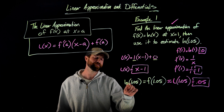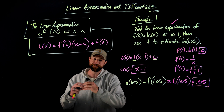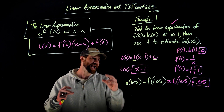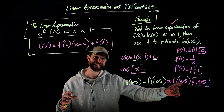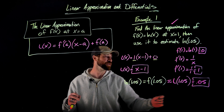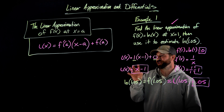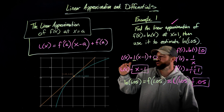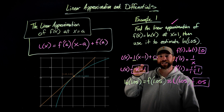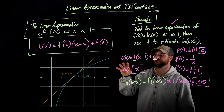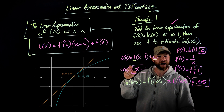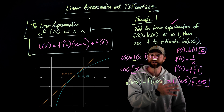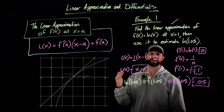We're estimating the natural log of 1.05 by first finding the equation of the tangent line near x equals 1, then plugging that value into the tangent line. Looking at the graphical representation, the output of this linear approximation is a little bit off from the function natural log at x equals 1, but not much. Without the use of technology, that is a really, really good estimate for the value of the natural log of 1.05.